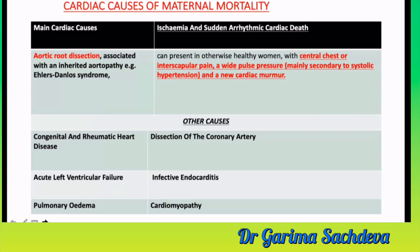Cardiac causes of maternal mortality include ischemia, sudden MI, and sudden arrhythmic cardiac death. Other causes include aortic root dissection, which can be associated with inherited aortopathy like Ehlers-Danlos syndrome or Marfan syndrome. Characteristic presentation is central chest or interscapular pain with wide pulse pressure mainly secondary to systolic hypertension and a new onset cardiac murmur. Other causes include congenital and rheumatic heart disease, acute left ventricular failure, pulmonary edema, infective endocarditis, and cardiomyopathy.